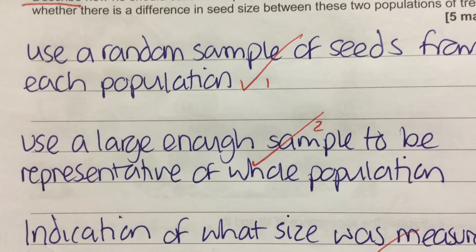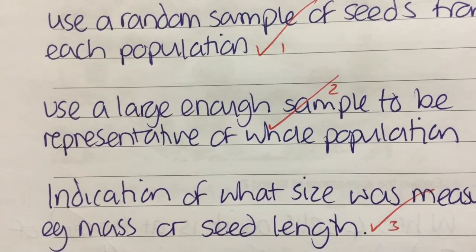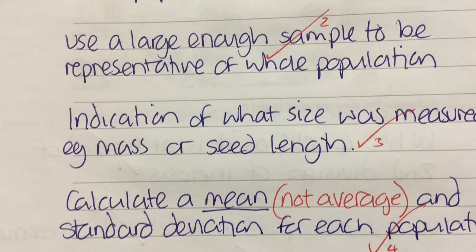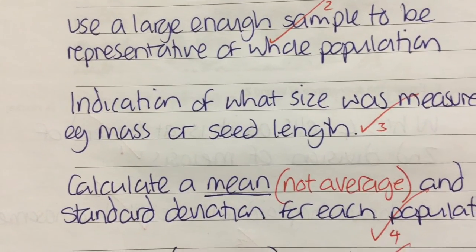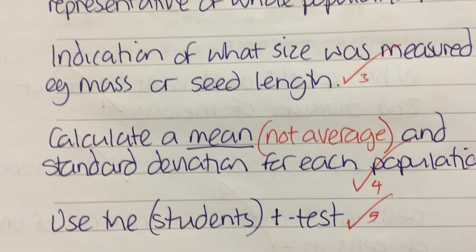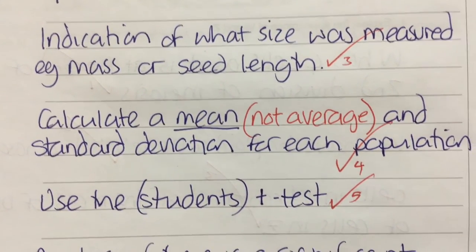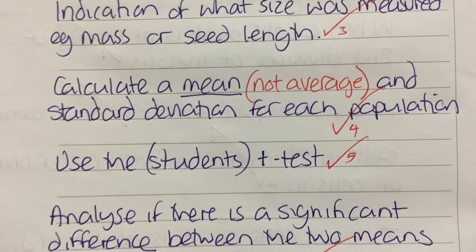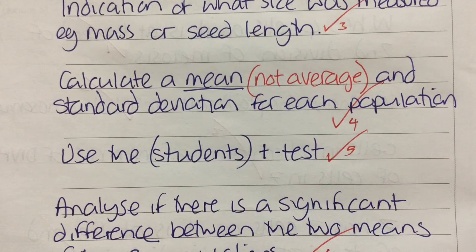You need to indicate what you're going to measure to compare the seeds — whether it's mass or seed length. Then you calculate a mean (not just an 'average', since there are three types of average). Next, use standard deviation for each population to see if there is an overlap. If there is no overlap, suggesting a difference, you would then apply the Student's t-test to find out whether there is a statistically significant difference between the two means. My top tip is to recognise that the word 'significant' can only be used following a statistical test — not from the standard deviation alone.